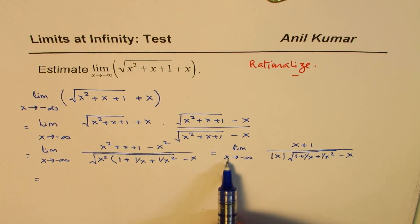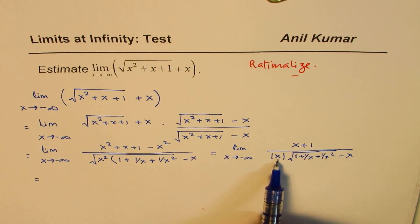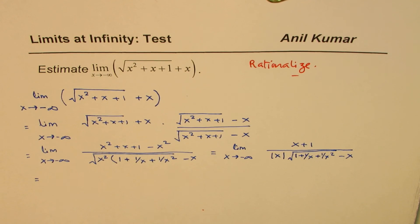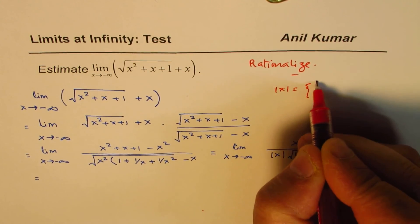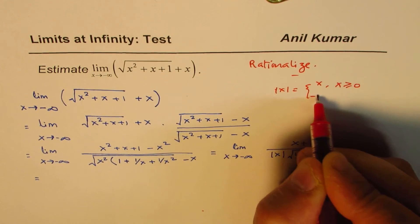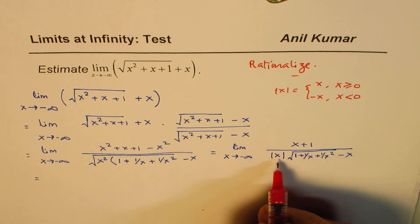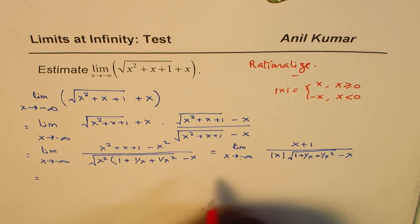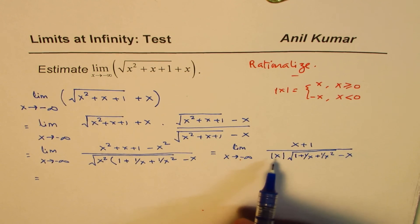Now, as x approaches negative infinity, what happens to the absolute value of x? The absolute value of x is defined as: x for x greater than or equal to 0, and minus x for x less than 0. So as x approaches negative infinity, absolute value of x becomes minus x.